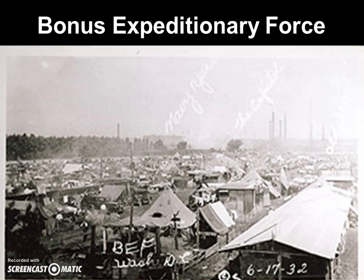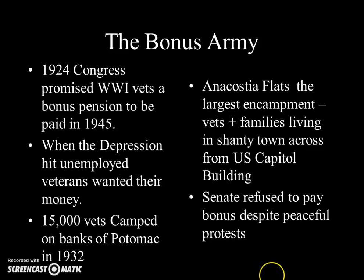But all of this was a little too late, and when the Bonus Army moved into Washington things went downhill for President Hoover. In 1924, Congress had promised World War I veterans a bonus pension to be paid in 1945. When the Depression hit, unemployed veterans wanted that money nearly 15 years earlier. 15,000 vets moved into Washington on the banks of the Potomac in 1932 to protest and lobby Congress to give them their pension early. Anacostia Flats became the largest encampment, full of vets and their families living in shanty towns right across from the Capitol building.